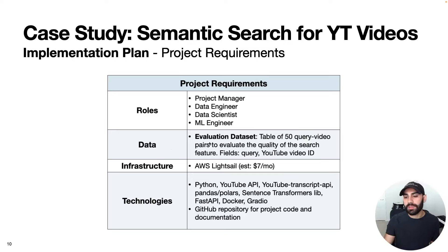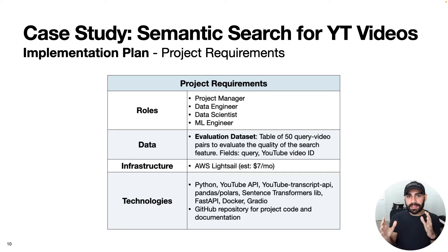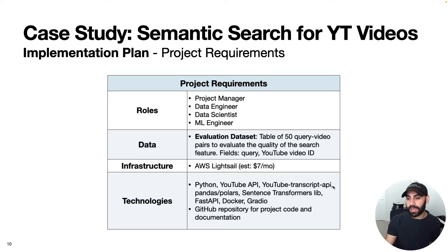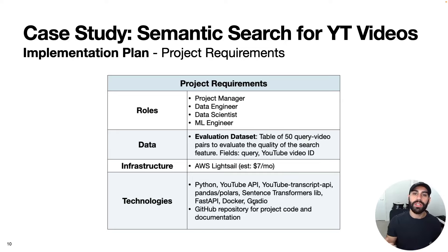The data requirements include an evaluation data set of 50 query-video pairs to evaluate the quality of the search — a list of 50 queries each with an associated YouTube video ID. For infrastructure, I'm going to use AWS LightSail, which makes it super easy to deploy Docker containers. For technologies: Python for basically everything, the YouTube API to pull in data, a Python library that downloads auto-generated captions of YouTube videos, pandas to handle data structures, the sentence-transformers library to generate text embeddings, FastAPI to make an API, Docker to containerize scripts, and Gradio to spin up a front end.